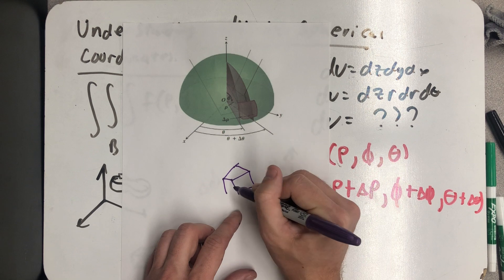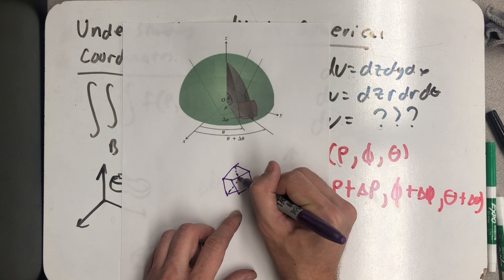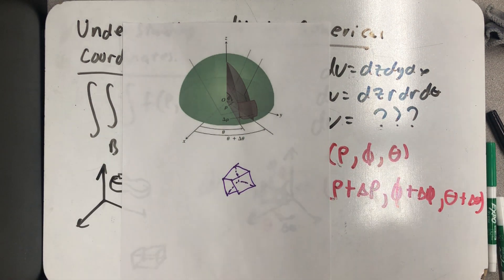I know it's not. I know there are curvy parts to it, but I'm going to pretend that it's a rectangular prism, which I'm doing a terrible job of drawing, but that'll work. Pretend that's a rectangular prism.